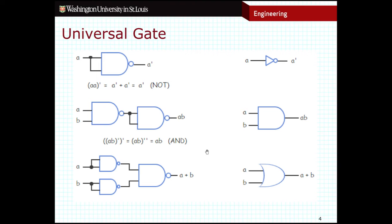Another important implication of using only NAND gates is that they require fewer transistors than AND gates and OR gates. Fewer transistors means I can fit more of them onto a chip, and it actually means better performance as well, as we'll talk about in future classes. A NAND gate is one type of universal gate; a NOR gate is also a universal gate. You can construct these gates using only NOR gates as well, which we may see in future classes.